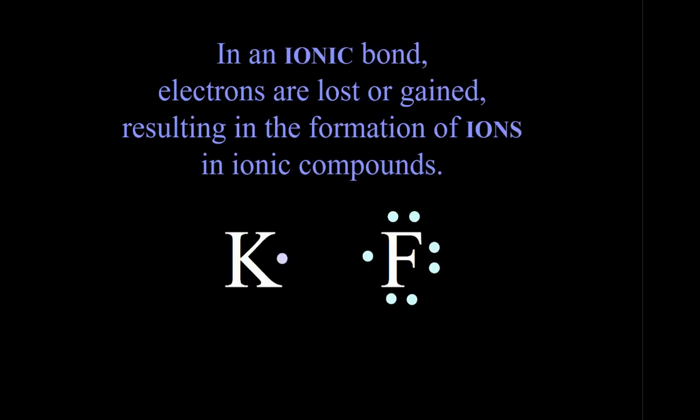So first let's describe what's going on in ionic bonding. In ionic bonds, electrons are lost and gained resulting in the formation of ions in ionic compounds. So remember our metals are losers, our nonmetals are gainers.